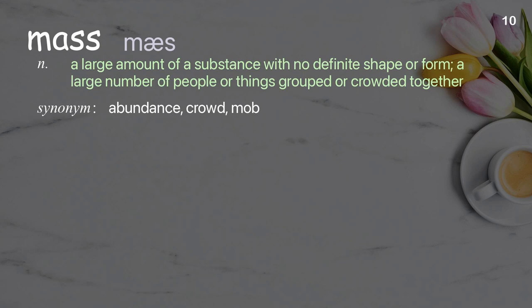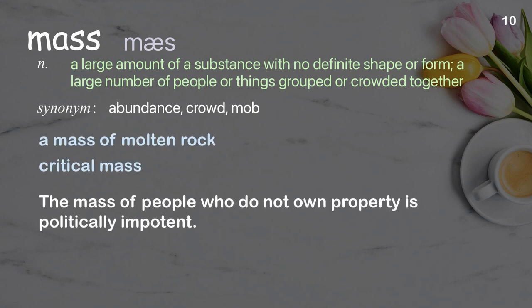Mass: A large amount of a substance with no definite shape or form; a large number of people or things grouped or crowded together. Examples: A mass of molten rock, Critical mass. The mass of people who do not own property is politically impotent.